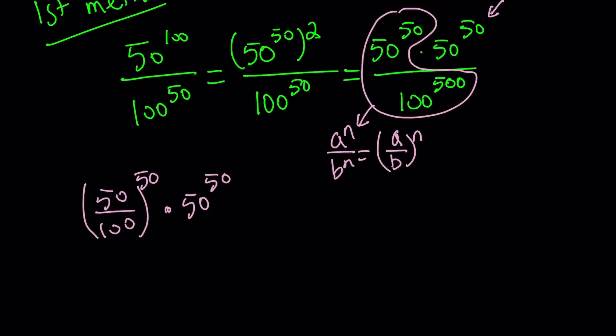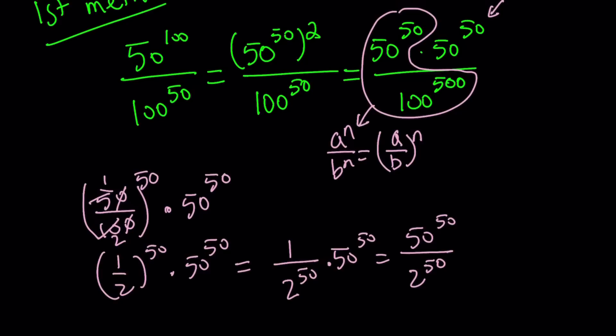What do we do next? 50 goes into 100 two times. Simplify, you get 1 half. So we have 1 half to the power 50 times 50 to the power 50. And guess what? They can be multiplied. You can first write this as 1 over 2 to the power 50 times 50 to the power 50. And then this is 50 to the power 50 divided by 2 to the power 50. At this point, we're going to use the same rule, this time with different bases. And it's going to be 50 over 2 to the power 50, which is 25 to the power 50. That's the answer.